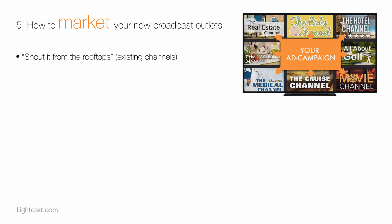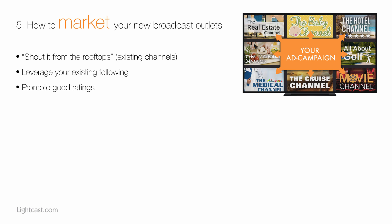First, shout it from the rooftops. Use all your existing marketing channels and your existing following on social media, in real life, your customers — everyone can be a promoter of your OTT properties. Promote good ratings in the app stores: ask everyone you know, your customers, your social followers, to go to the app stores, find your apps, download them, install them, watch them, and give a five-star rating. Run OTT ad campaigns on other established OTT channels — there are many OTT channels and apps out there that accept advertising, providing a great opportunity to grab the attention of traffic and viewership on other OTT channels and apps.